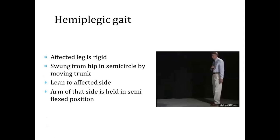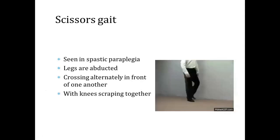Hemiplegic gait: the affected leg is rigid, swung from the hip in a semicircle by moving the trunk, with a lean to the affected side. The arm of that side is held in a semi-flexed position. In scissors gait, seen in spastic paraplegia, the legs are adducted and cross alternately in front of one another with knees scraping together.